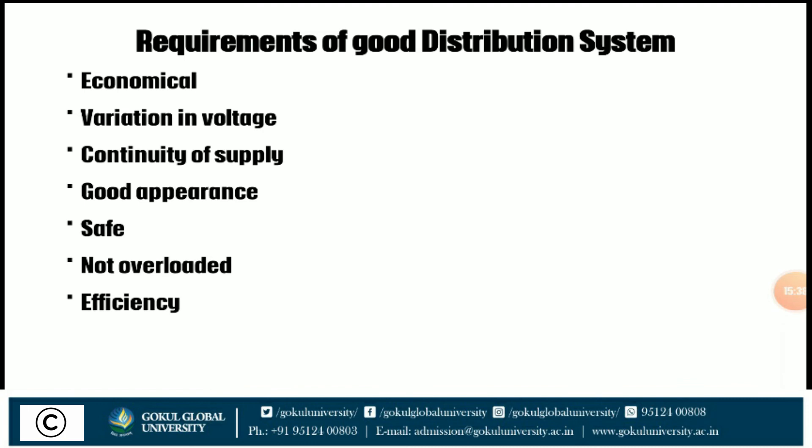Now we discuss the requirements of a good distribution system. First, it should be economical. Second, variation in voltage — the voltage at consumer premises should not vary more than prescribed limits; as per Indian Electricity Rules, the voltage variation should not exceed a fixed percentage of rated voltage. Third, continuity of supply — power should be supplied continuously without interruption. Fourth, good appearance — the layout should not affect local appearance. Fifth, safety — distribution lines should not have leakage. Sixth, it should not be overloaded. Seventh, efficiency should be as high as possible.